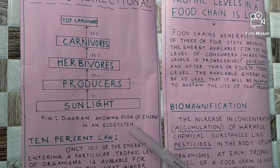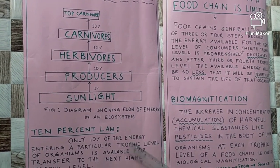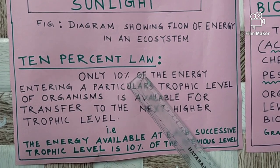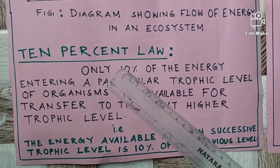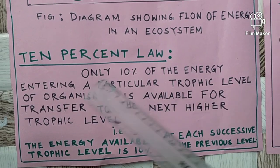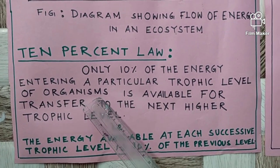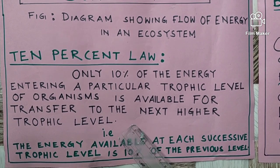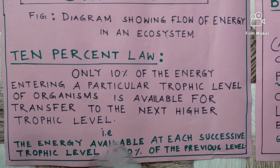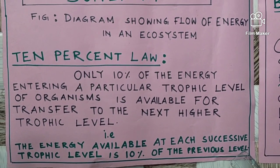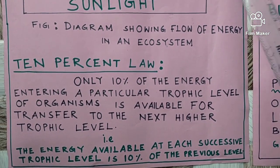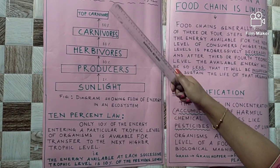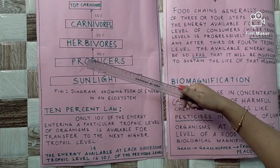This is the diagram showing flow of energy in an ecosystem. Now, the 10 percent law. It was given by the scientist Raymond. It states that only 10 percent of the energy entering a particular trophic level of organisms is available for transfer to the next higher trophic level. That is, the energy available at each successive level is 10 percent of the previous level. The energy going from producer to the top carnivore cannot return back to the previous level.